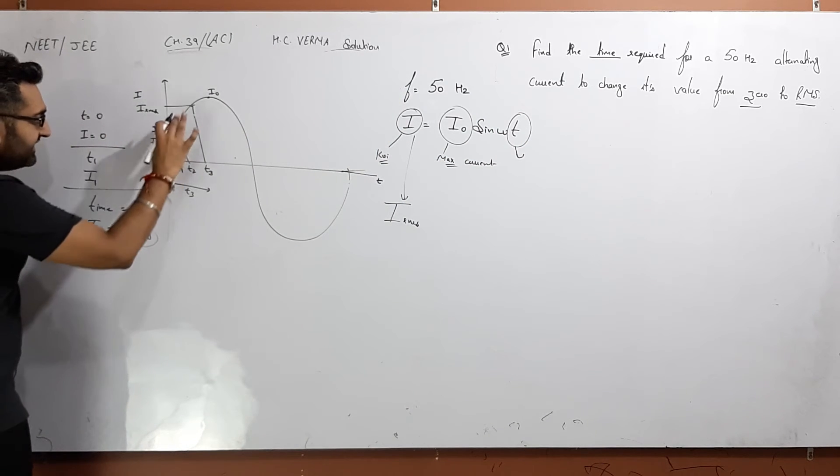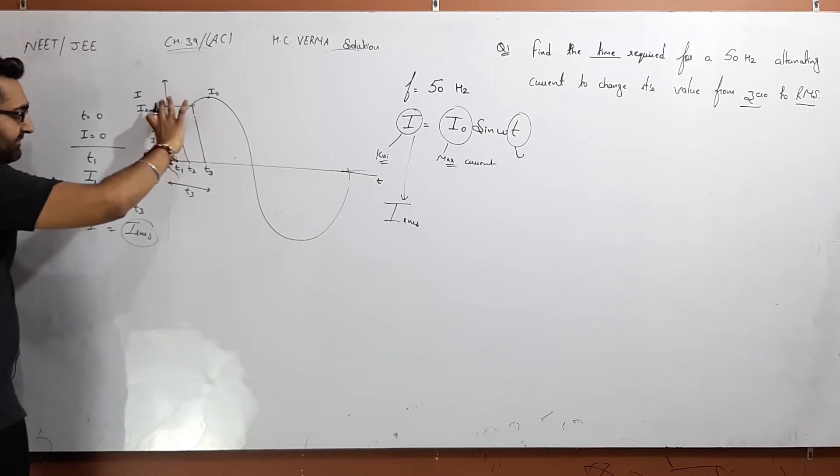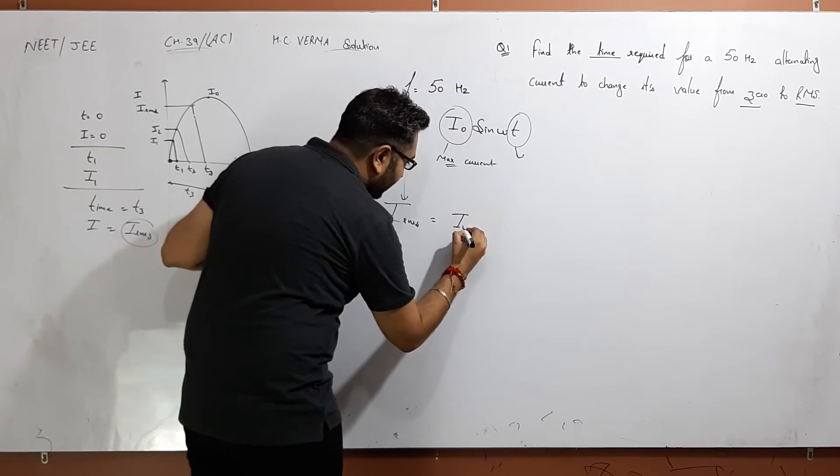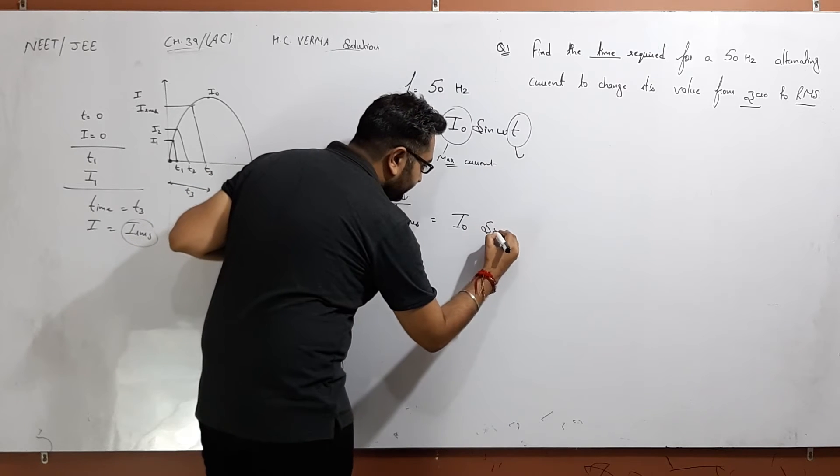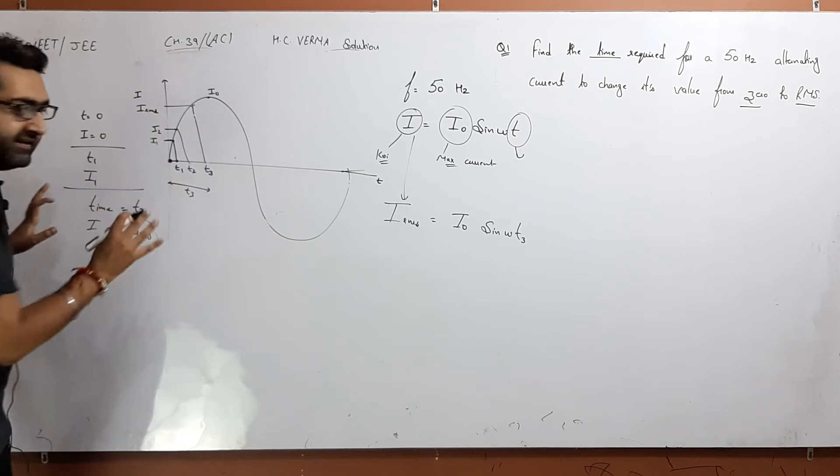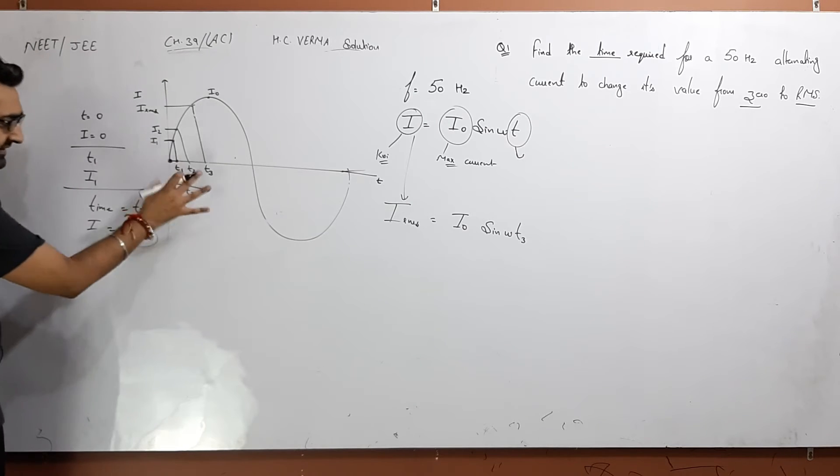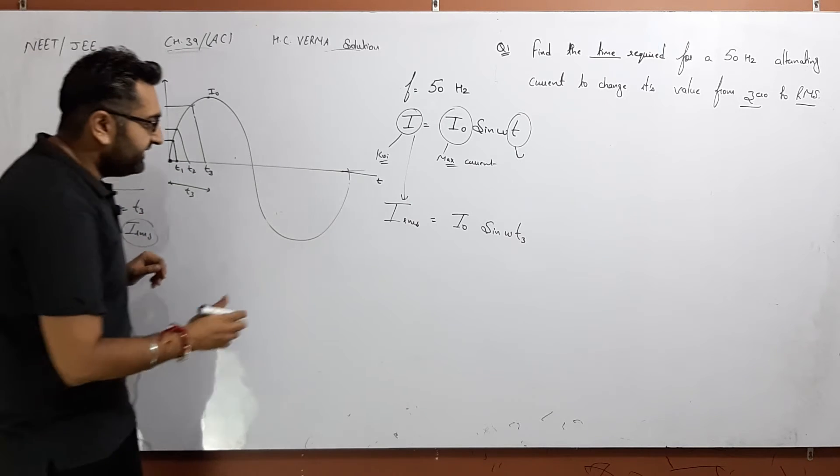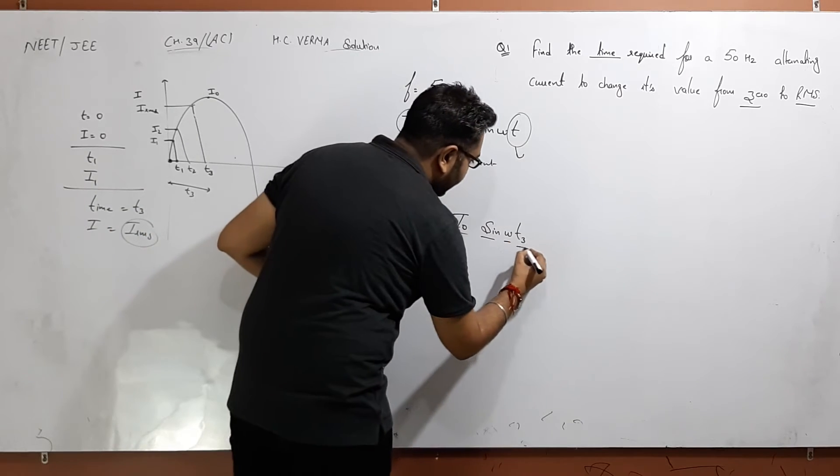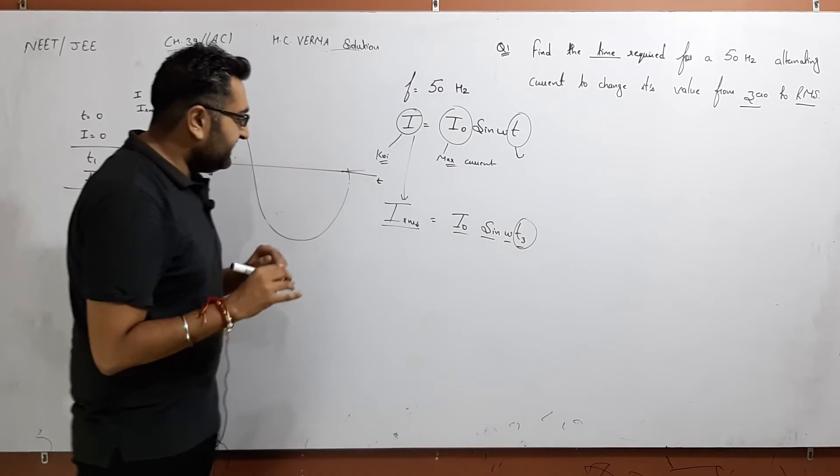Because it has said where are you going to go? We are going to go to IRMS. So that is the thing: I naught sin omega T. Which time do you want? T3, just an example. You can put T as well, no issue.